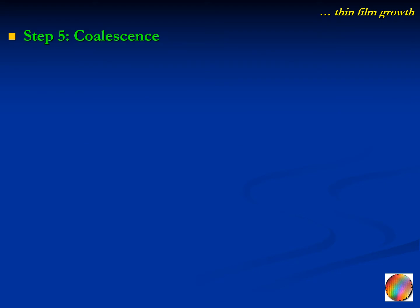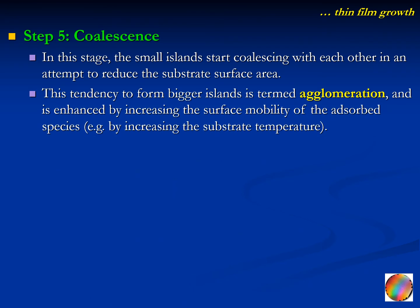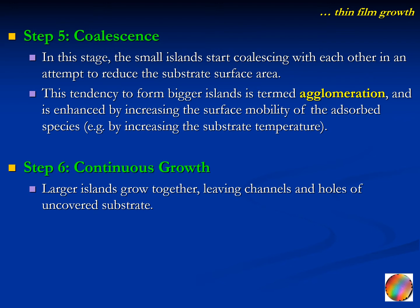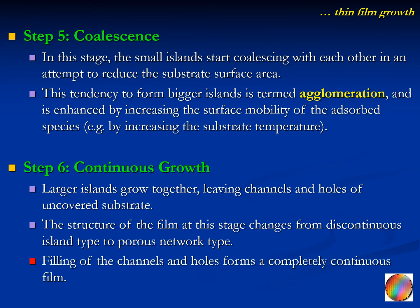After the formation of islands, we have coalescence — the merging or fusion of the islands. The small islands start coalescing together in an attempt to reduce the substrate surface area. This tendency to form bigger islands is termed agglomeration and is enhanced by increasing the surface mobility of the absorbed species, for example by increasing the substrate temperature. The final step is continuous growth: larger islands grow together, leaving channels and holes of uncovered substrate. The structure changes from discontinuous island type to porous network type, and filling of the channels and holes forms a completely continuous film.